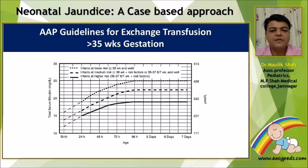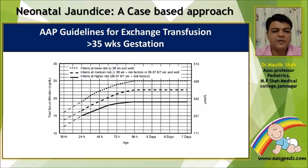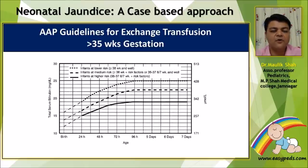The AAP guidelines for exchange transfusion follow the same structure as phototherapy but at different bilirubin levels. The first 24-hour cutoff values are shown as dashed lines due to uncertainty in the normogram for the first 24 hours, so each unit must have its own policy for early-onset jaundice in that first 24-hour window.